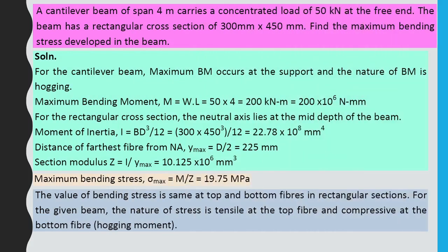Problem 2: A cantilever beam of 4 meter span carries a concentrated load of 50 kN at the free end. The beam has a rectangular cross section of 300 mm × 450 mm. For a cantilever beam, the maximum bending moment occurs at the support, and the nature of bending moment is hogging (negative).